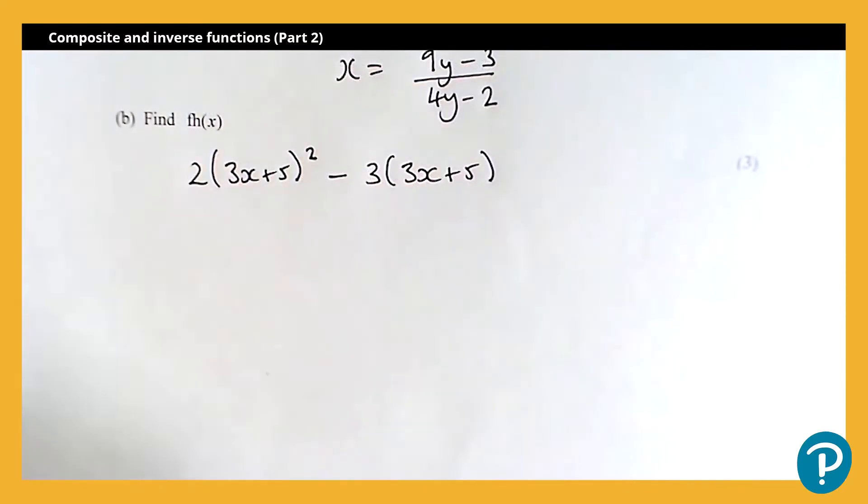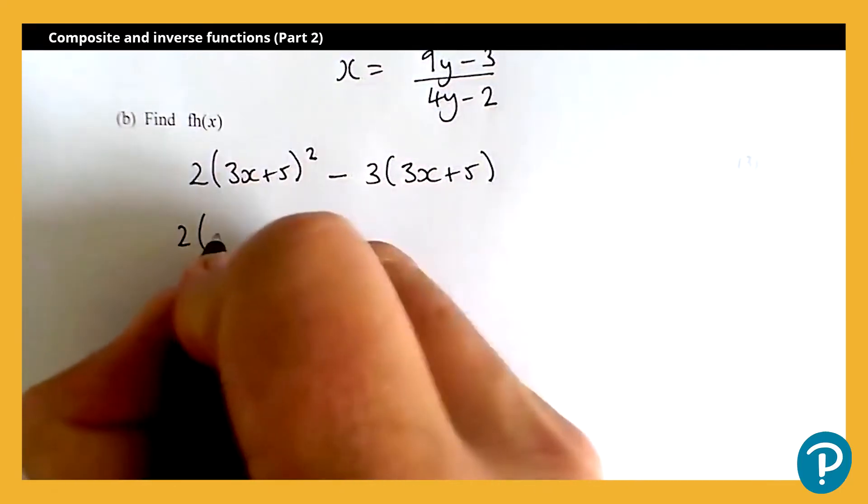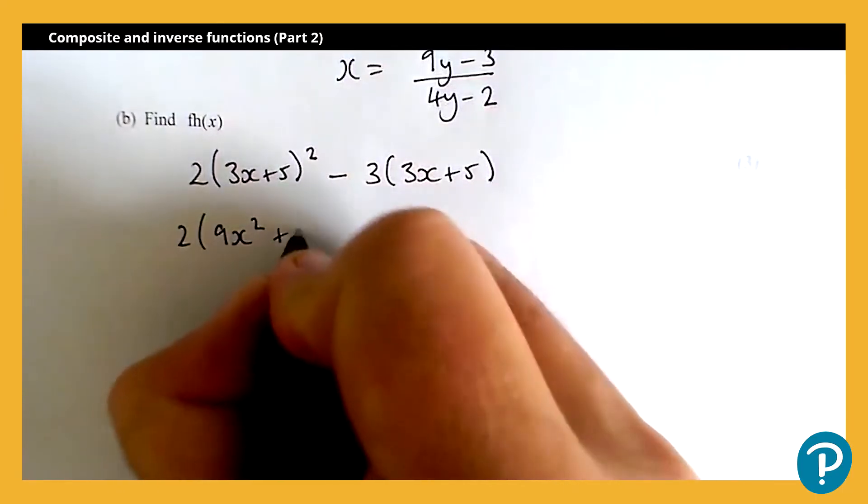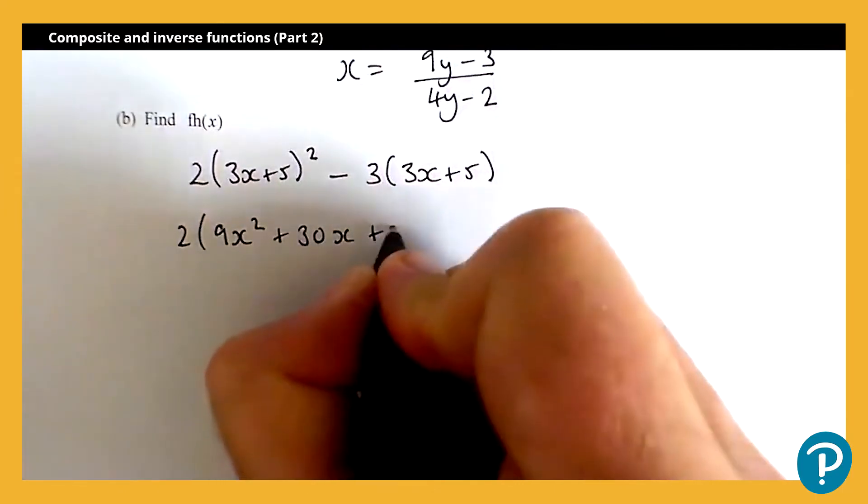So first job, let's expand the quadratic. So that's going to give me two lots of nine x squared plus 30 x plus 25.